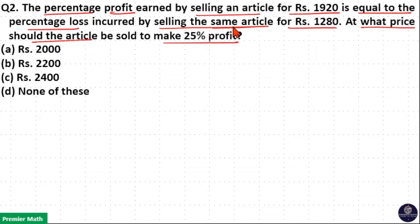Here same article is selling at different prices. When selling at 19.20 rupees, this article earned a profit. Let us consider it as P.